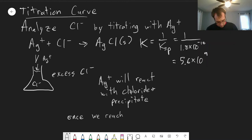So once we reach the equivalence point, the concentration of our silver will drastically increase because we'll just be putting in excess silver.